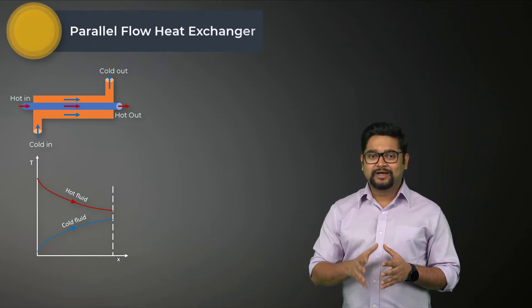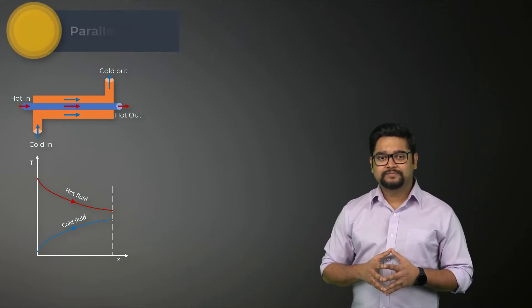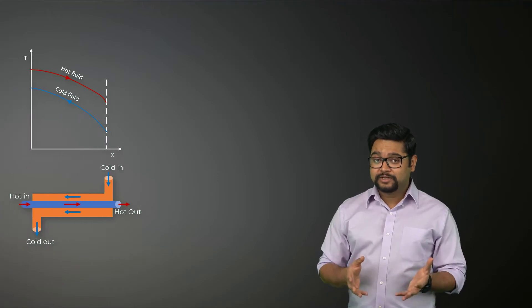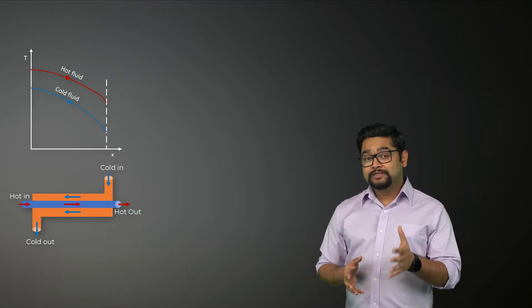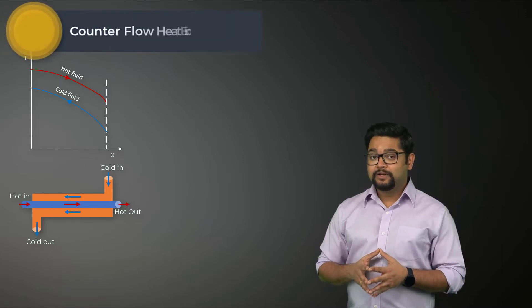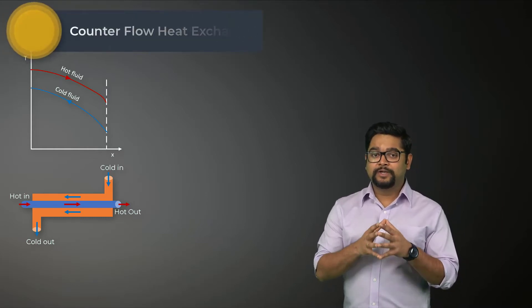This configuration is known as parallel flow heat exchanger. Now, on the other hand, if the fluids move in the opposite direction, then we would get this temperature distribution and the setup is commonly referred to as counter flow heat exchanger.